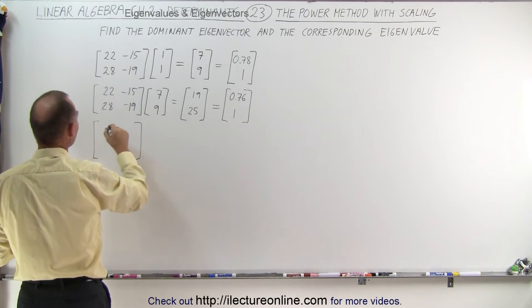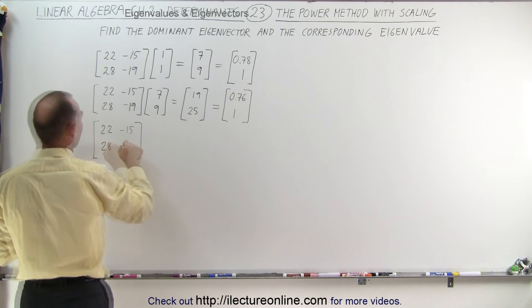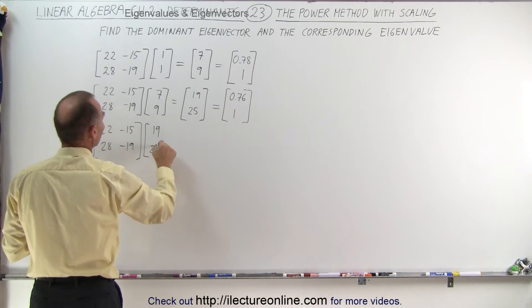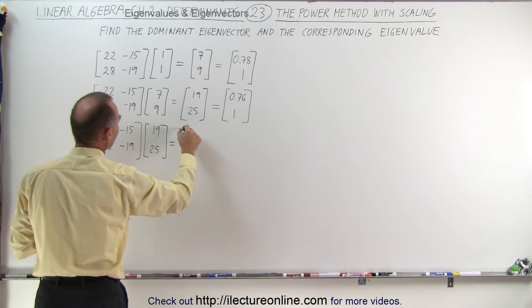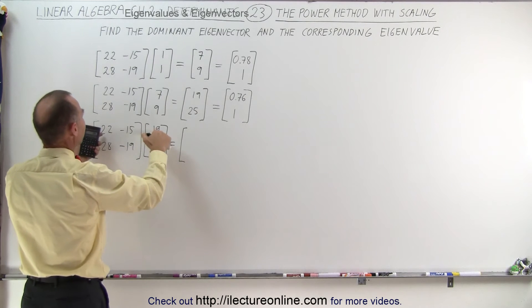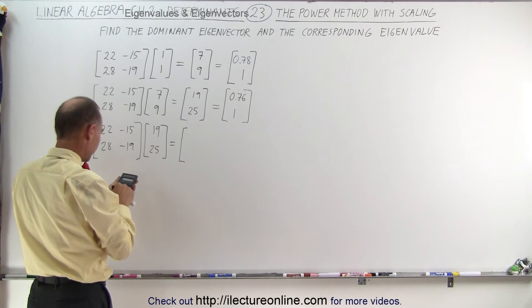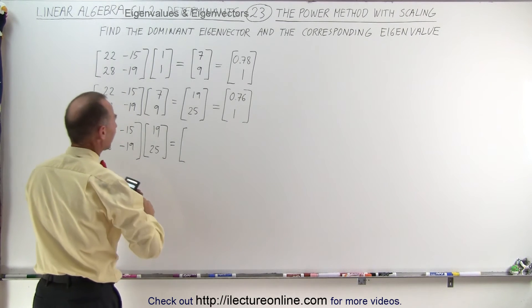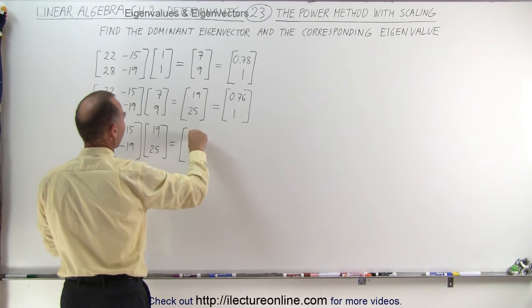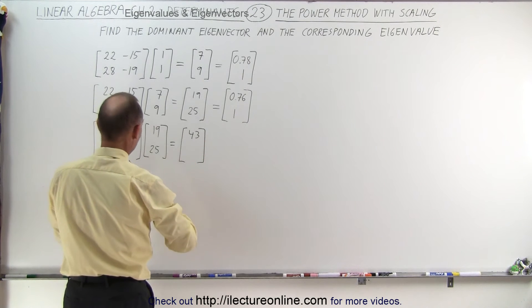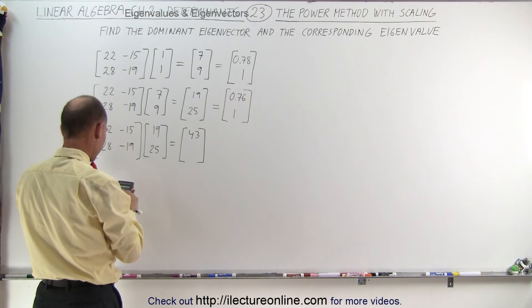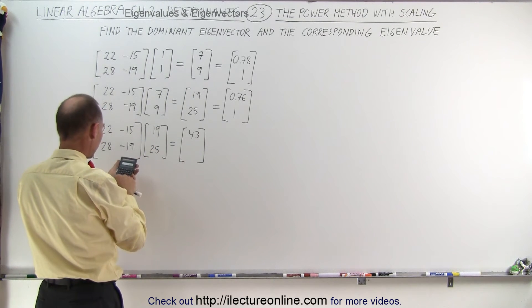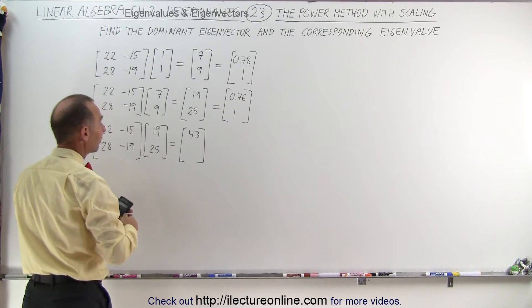So the next attempt again we use our initial matrix and now we replace this by 19 and 25. You can see that a calculator definitely comes in handy here. 19 times 22 minus 15 times 25 that gives us 43. And for this number we get 28 times 19 minus 19 times 25. And we get 57.